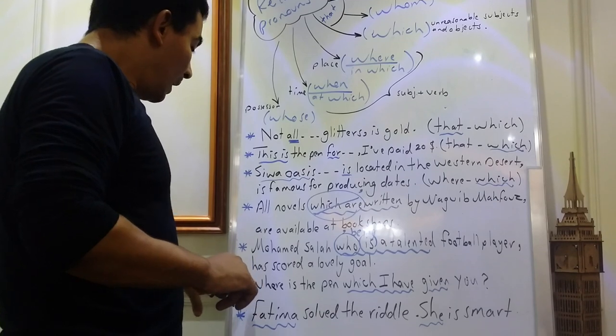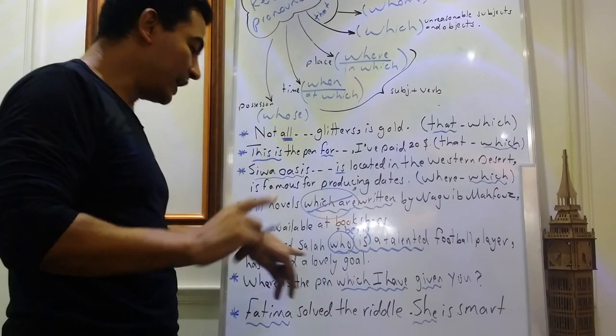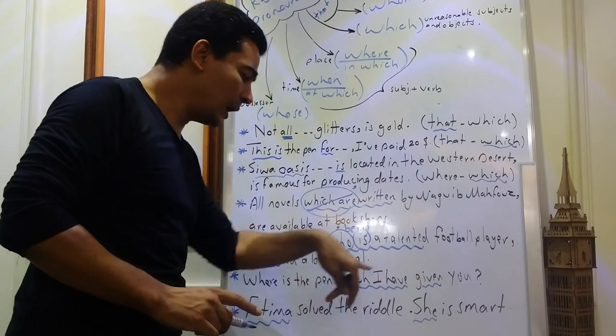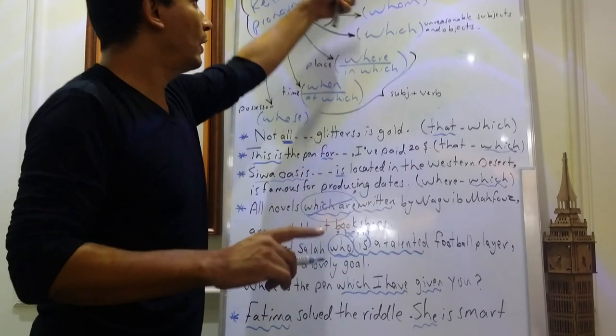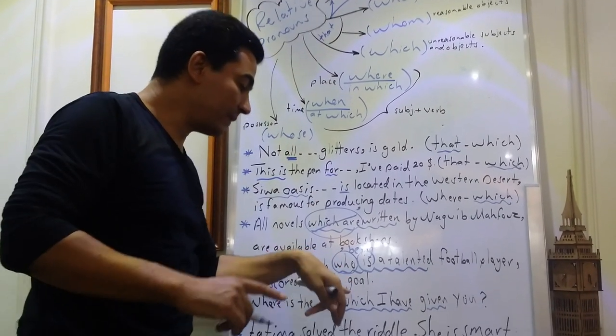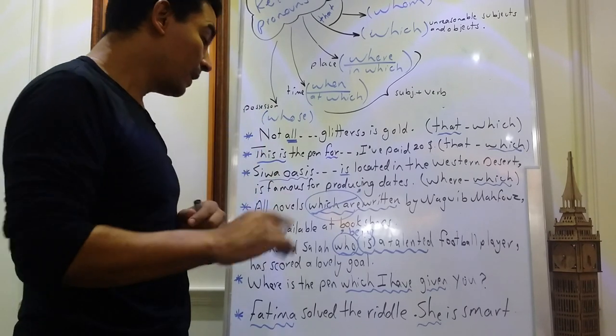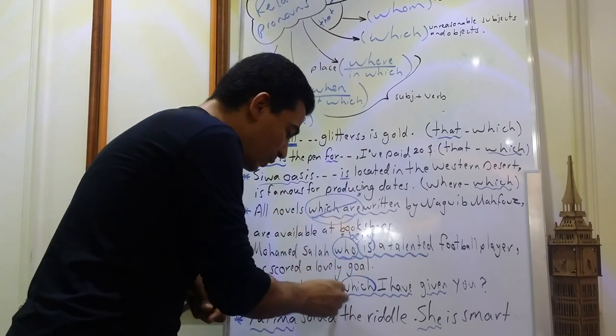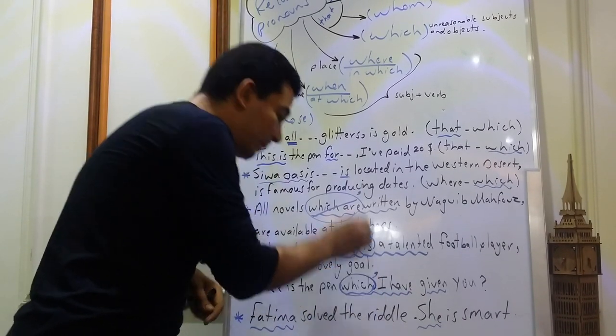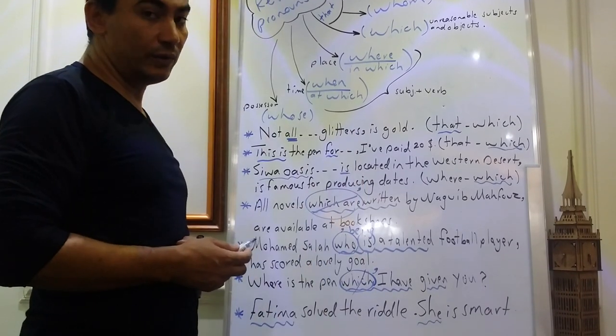Next. Where is the pin which I have given you? Of course, here we have a relative pronoun plus subject and verb. Take care. Who, whom, and which in addition to that. If we have a subject and verb that follows them, so I can simply omit the relative pronoun to be replaced by comma. So I can say where is the pin, comma, I have given you.